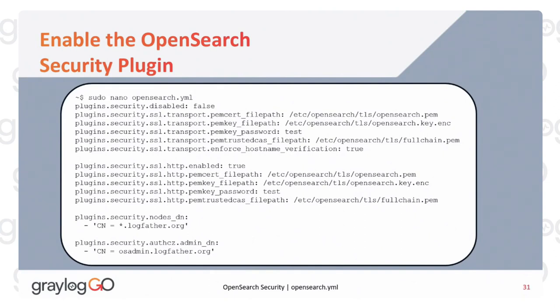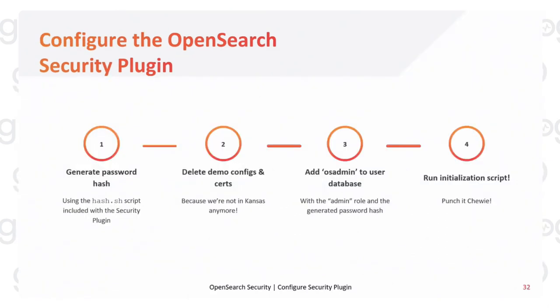At the bottom we have the OpenSearch admin certificate. The CN here is largely irrelevant because it doesn't have to map to an actual username — this is basically you telling OpenSearch that any client presenting this certificate can do admin things with user authentication. There are four big steps to configuring the OpenSearch plugin, because the plugin is very large with lots of intricacies. The first step is to generate a password hash using the convenient hash.sh script that ships with the OpenSearch security plugin.